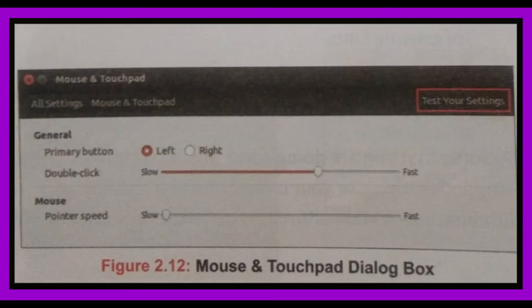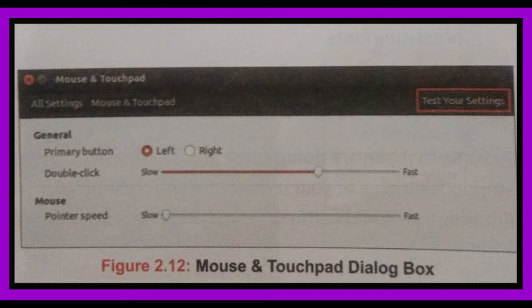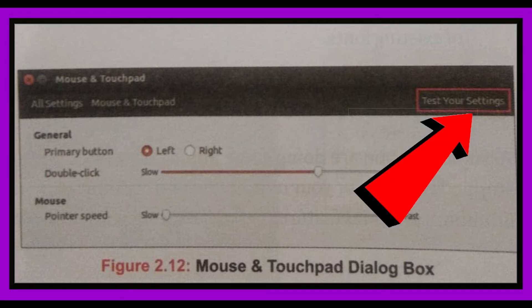Under the general section, select either the right or left radio button as the primary button. By default, the left radio button is selected. To change the double-click speed of your mouse, drag the slider towards the left to make it slow and towards the right to make it fast. Similarly, you can change the speed of the pointer. To check the recent changes made in mouse settings, click on the 'Test your settings' tab present on the extreme right corner of the Mouse and Touchpad dialog box.